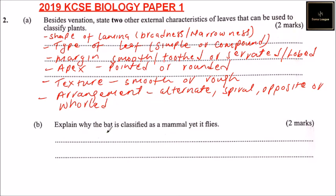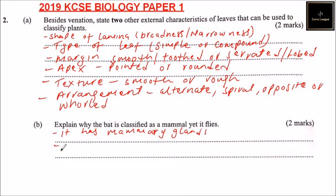But we explain why the bat is classified as a mammal yet it flies. So a bat is classified as a mammal and not a bird. The reason why it is referred to as a mammal is that it has mammary glands — it has mammary glands used to suckle the young one. Also, its body is covered with fur.